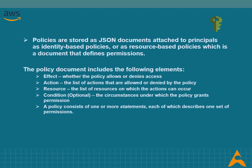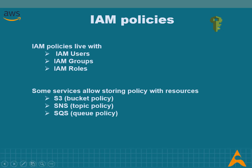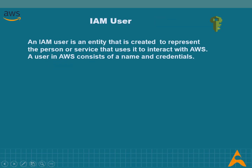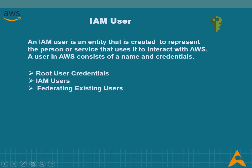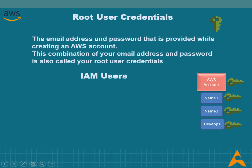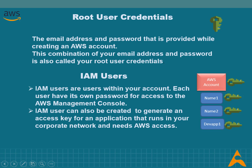IAM policies live with IAM users, IAM groups, and IAM roles. An IAM user is an entity created to represent the person or service that uses it to interact with AWS. For greater security and organization, you can give access to your AWS account to specific users. When you create an AWS account, you create an AWS account root user identity, which you use to sign into the AWS Management Console using the email address and password provided when creating the account — these are called your root user credentials.